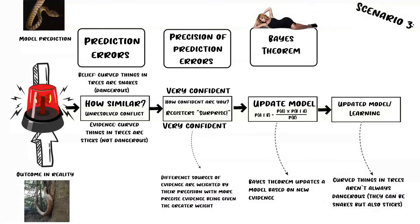Our brain was able to resolve the alarm bell by updating our predictions of the world. It updated the fact that curved things in trees can be dangerous and they can also be not dangerous.